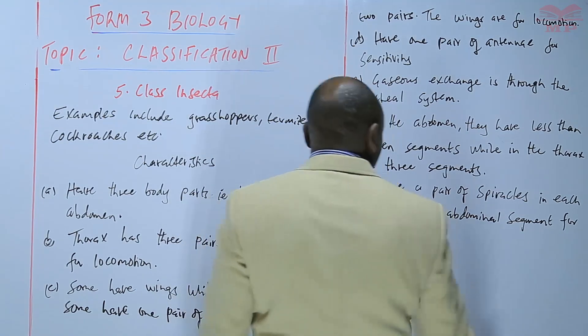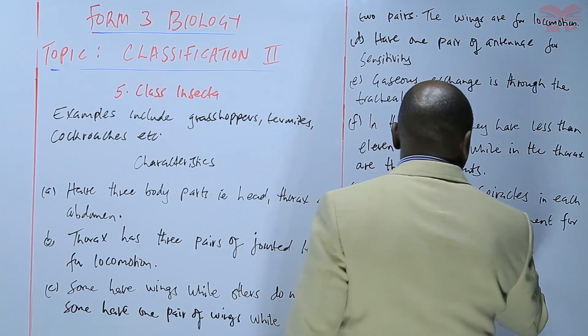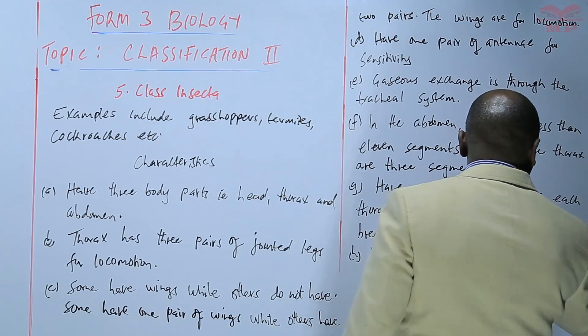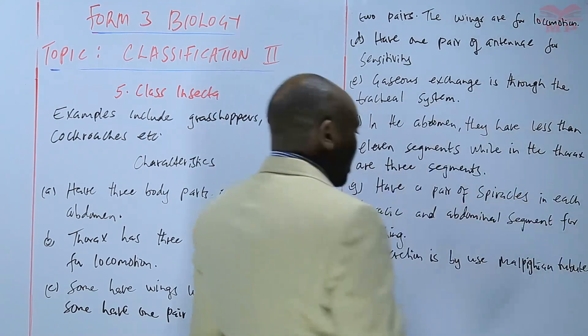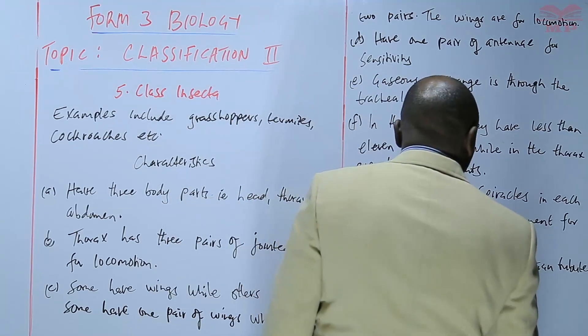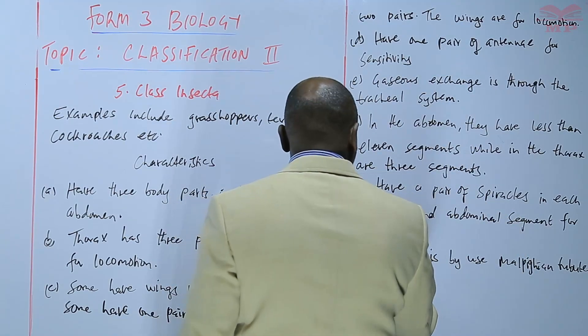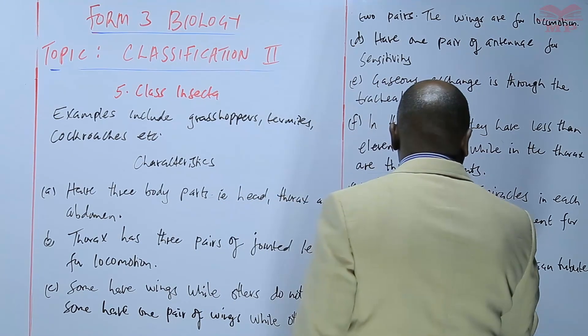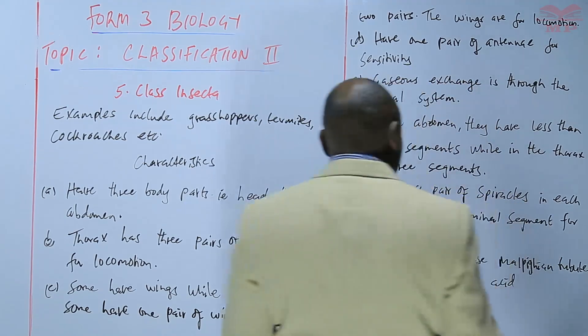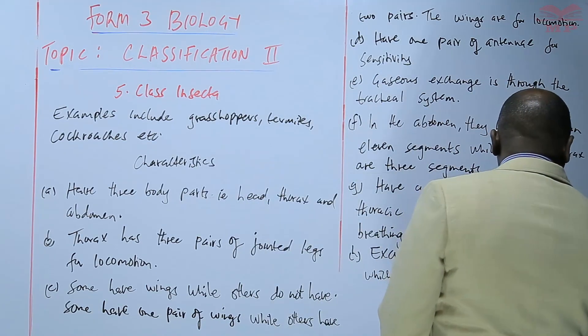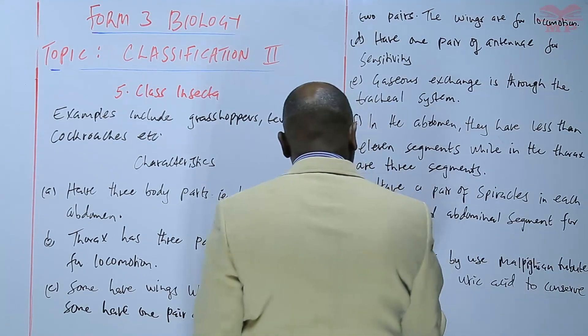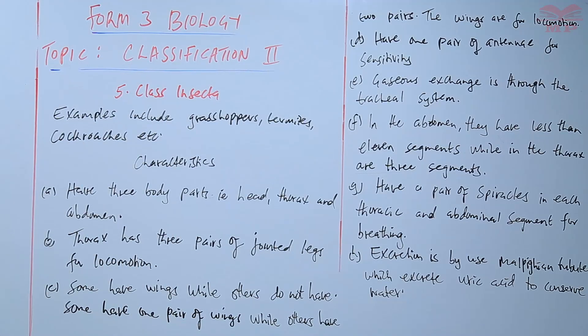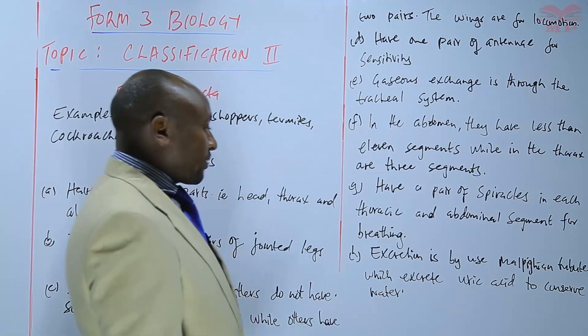Excretion is by use of Malpighian tubules. Insects excrete by use of Malpighian tubules which excrete uric acid. Uric acid is excreted by the insects as a way of conserving water or as a way of minimizing water loss from the insect's body.